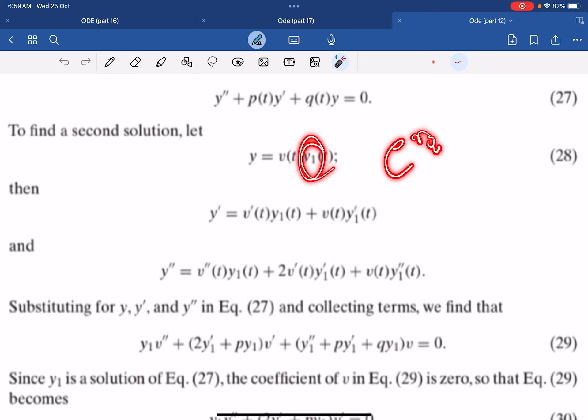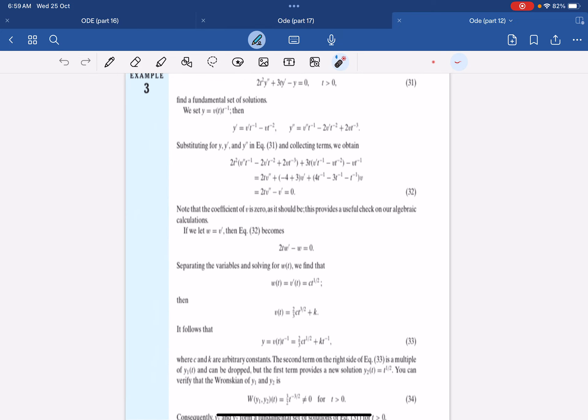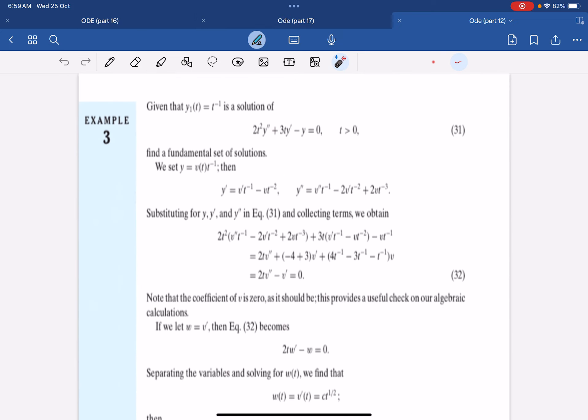This is very natural because imagine you have equal roots, so one root is this, the other root is just some function multiplied with this equal root. We see that if y1 is this solution, then to find the fundamental set of solutions we just let y equals to some function times (t-1). Then the prime is this, the double prime is this. Substitute into equation 31 and we get this formula.